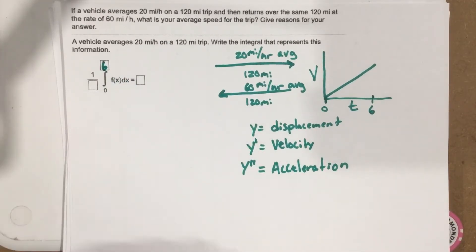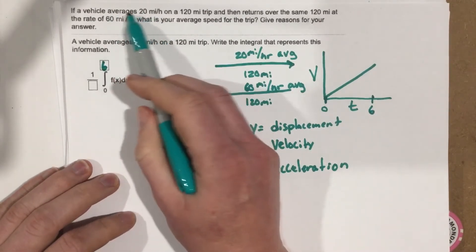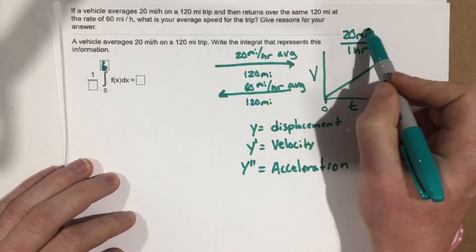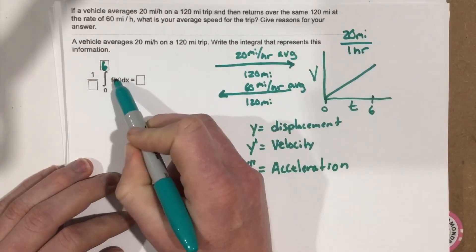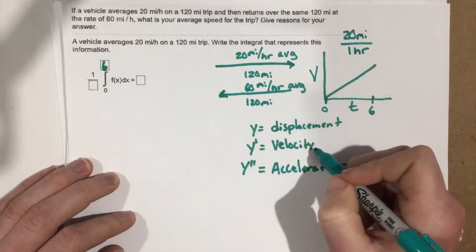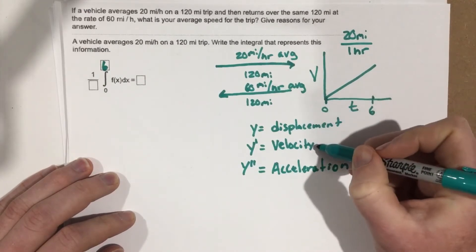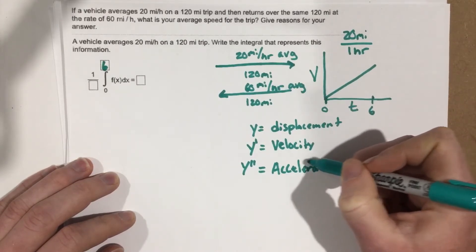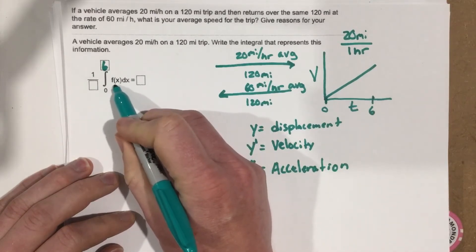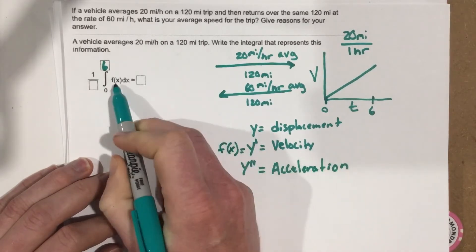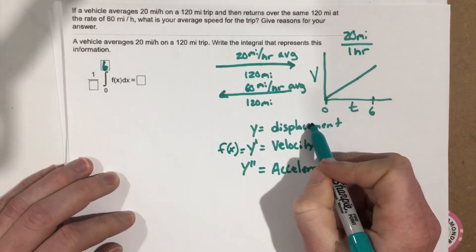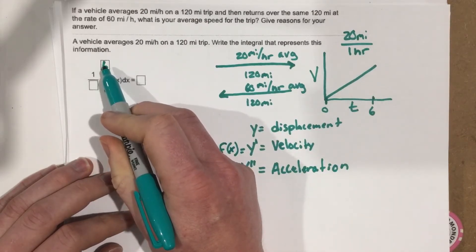So we're integrating from zero to six hours for the first part. Now what function do we integrate? In order to get an average speed — 20 miles per hour — we need distance divided by time. The function we integrate is the velocity function, because the integral of velocity gives displacement. So this f(x) is our velocity equation, and integrating it from zero to six gives us our total miles traveled.